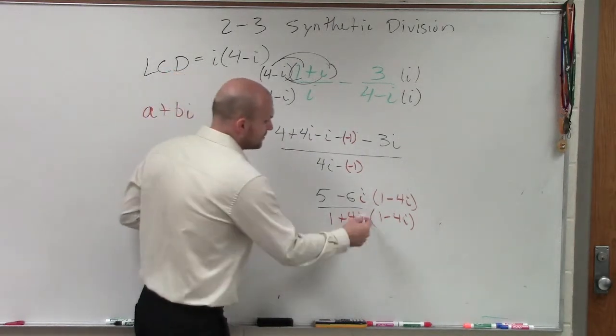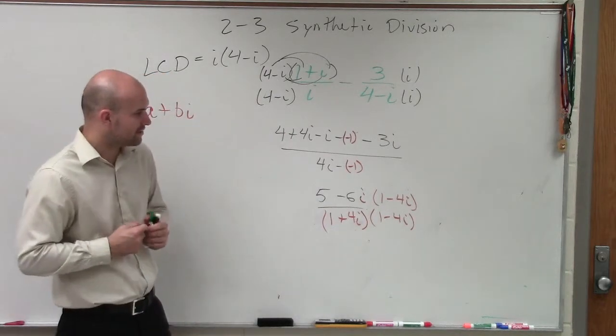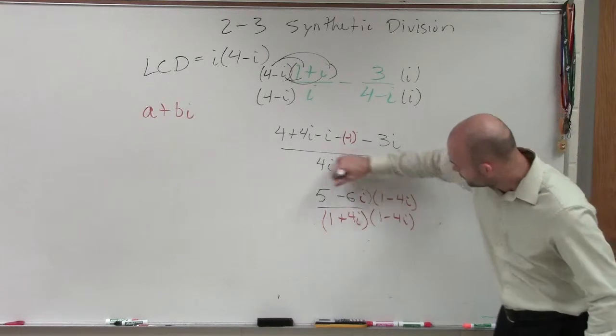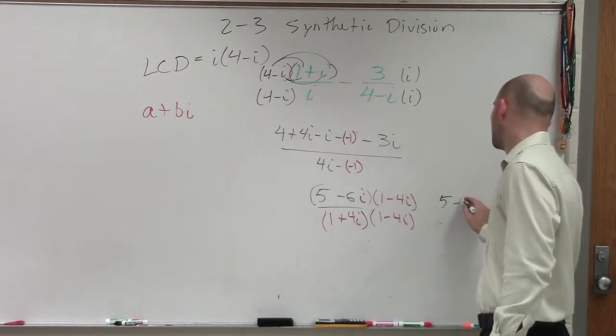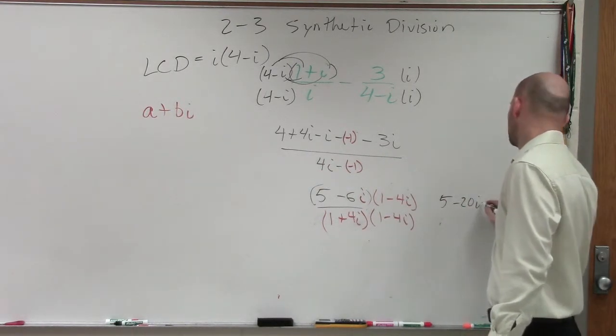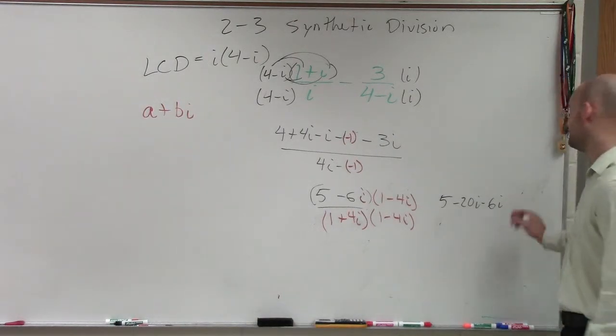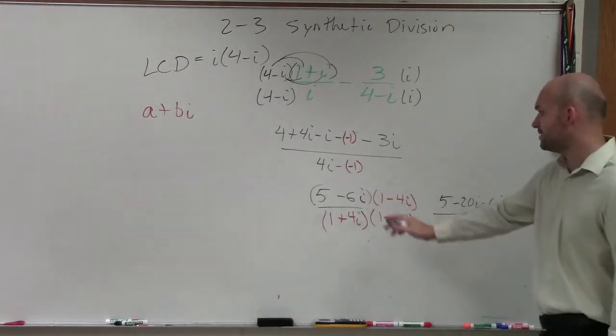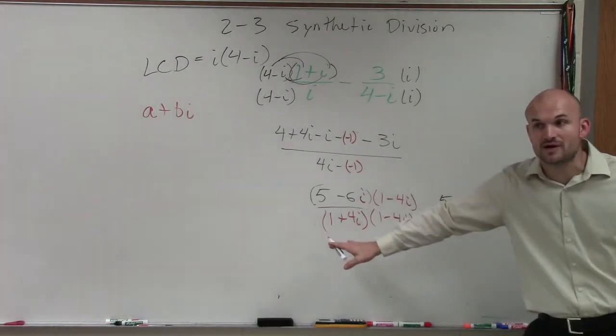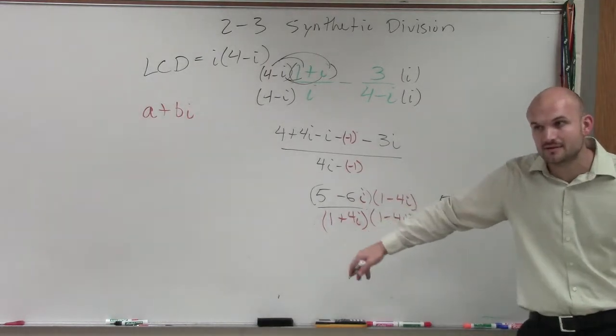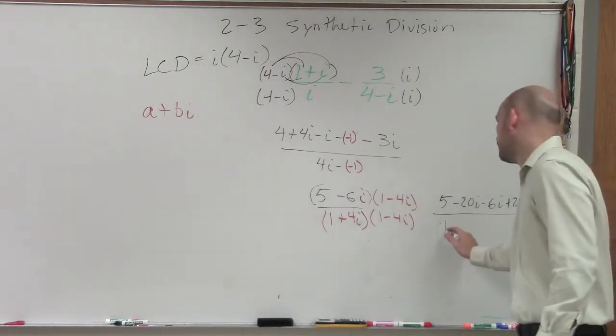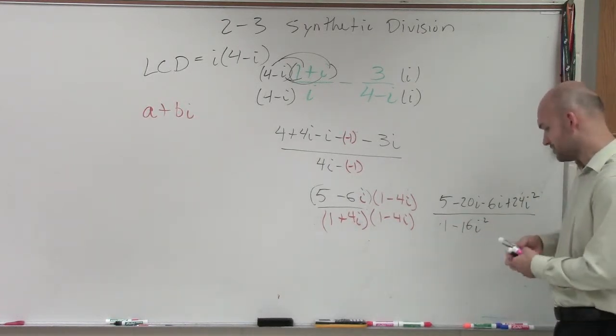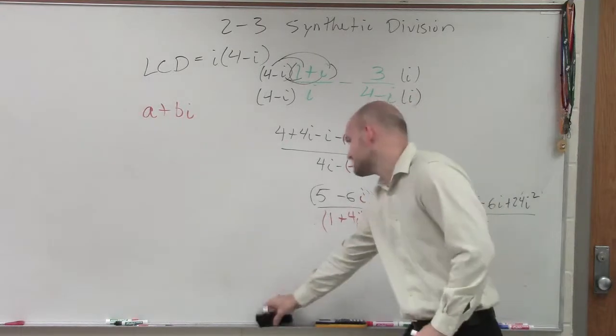So, now, we just need to multiply across. So, on top, we again need to apply FOIL. So, here we'll have five minus 20i minus 6i and then plus 24i squared all over our denominator. Remember, this is again a difference of two squares. Number by its conjugate. So, that's going to be 1 minus 16i squared. So, now let's simplify our terms. Let's rewrite our i squareds as negative 1.